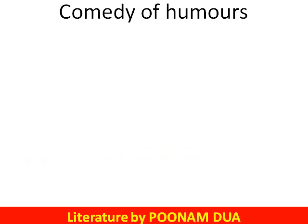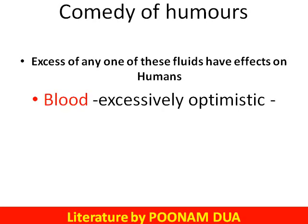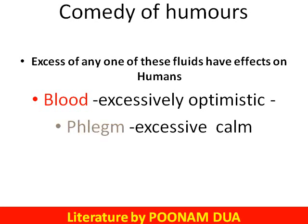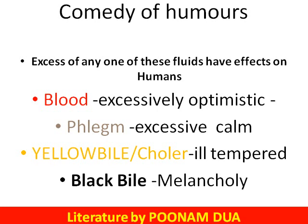It was believed that if someone has an excess or imbalance, that has different effects on different humans. For example, excess of blood used to make a person excessively optimistic even when there is not a single chance of hope. Phlegm makes one excessively calm, which is not required at times. Yellow bile makes a person ill-tempered, and black bile makes a person melancholic and excessively sad.